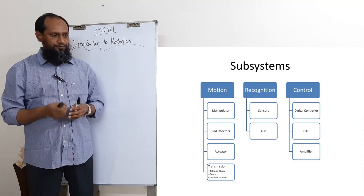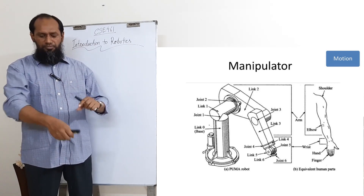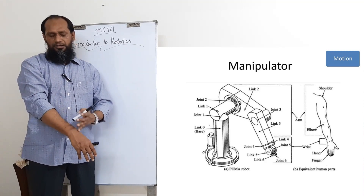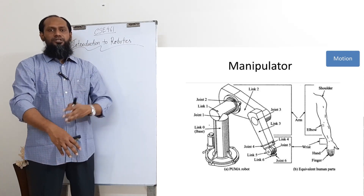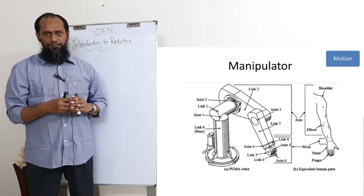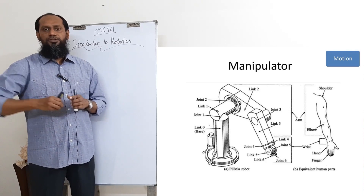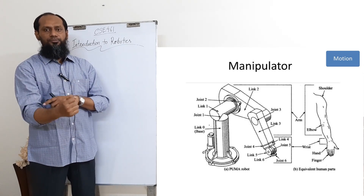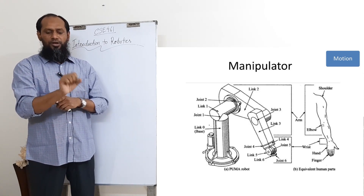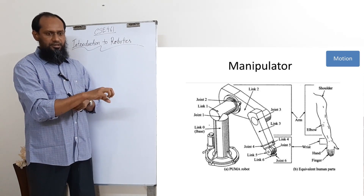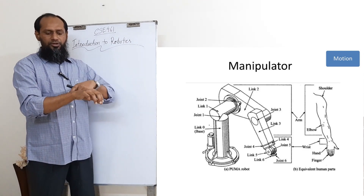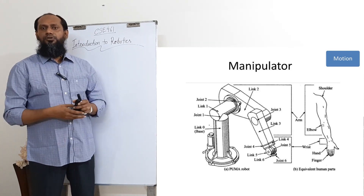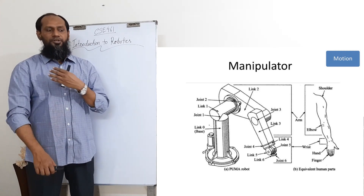A manipulator is the upper part of the arm — the main part which can move to a point in three-dimensional space. We mainly have six degrees of freedom: one joint gives one DOF, then two, then a third joint here gives three, and then joints four, five, and six. So there are usually six degrees of freedom on a manipulator.